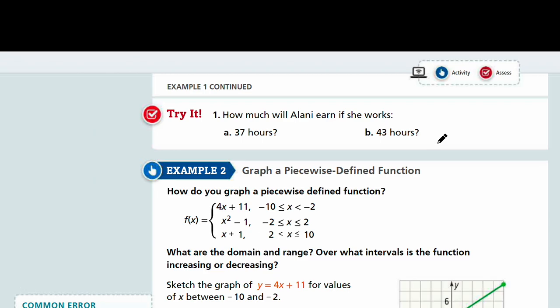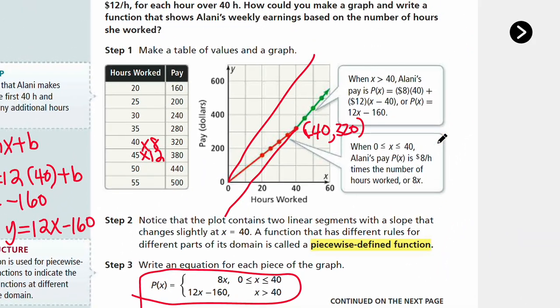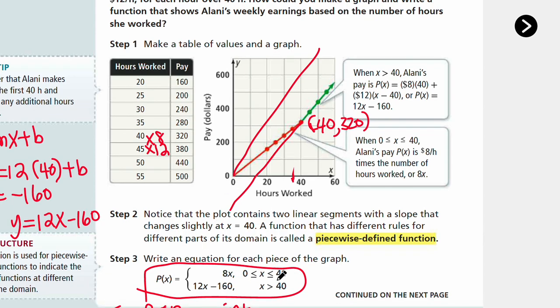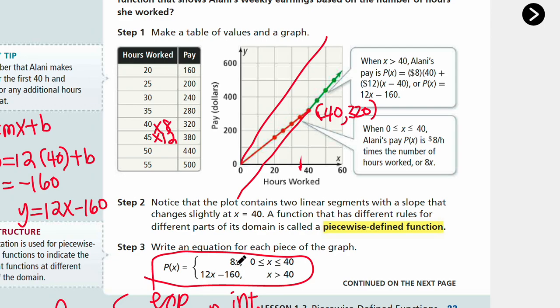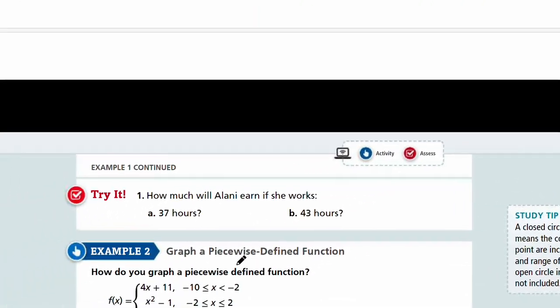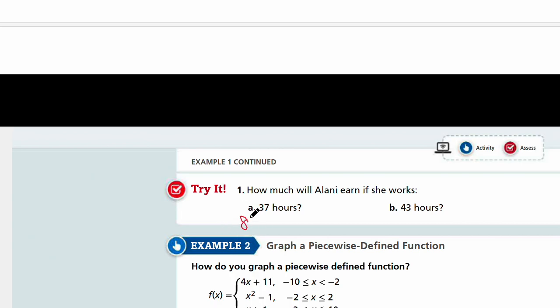Are you ready? So 37 hours. Look at your graph. 37 is somewhere here, it's less than 40. So you multiply by 8 because your slope is 8. If it's less than 40, you use the first equation. 8x is your function. 8 times 37 is 296, so she will earn $296.